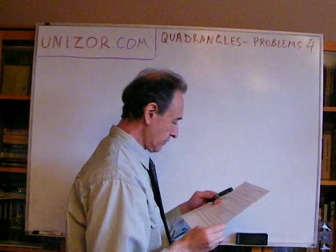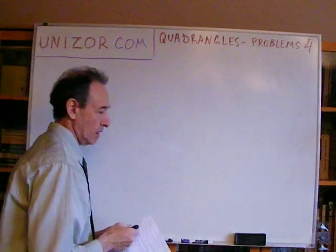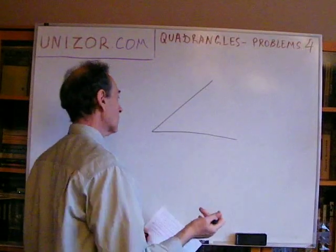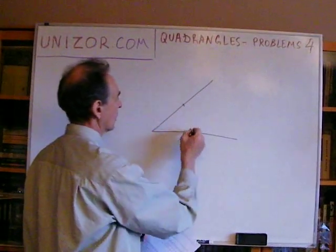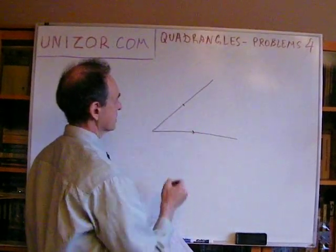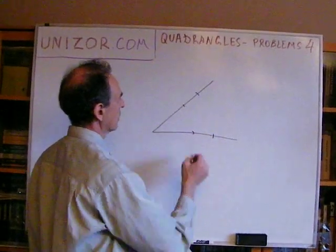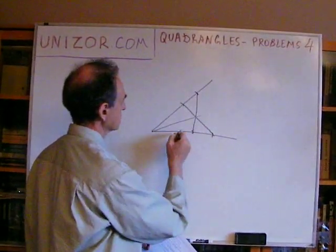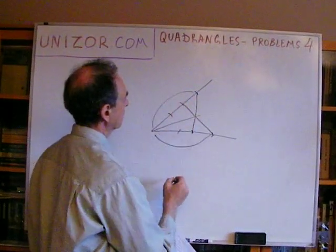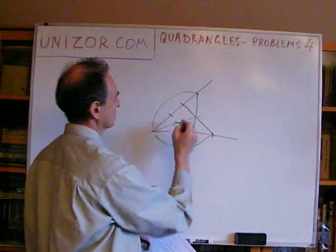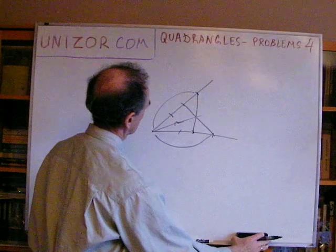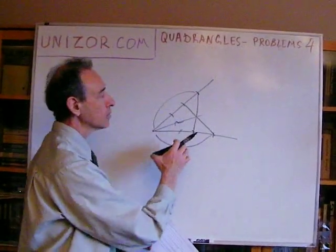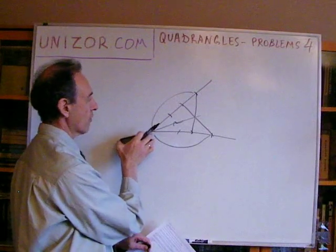Bisect an angle if its vertex is not reachable. You know how to bisect an angle normally: choose any radius, make two marks with the same radius on the two sides, then with a slightly bigger radius draw two arcs and their intersection gives the bisector. This is easy to prove because two corresponding sides are equal and the third is common, giving two congruent triangles. But in this problem, you need to know the vertex — and what if you don't have the vertex?